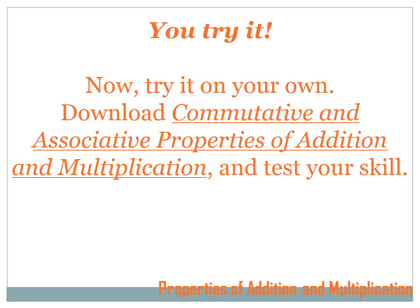That's our lesson on the commutative and the associative properties of addition and multiplication. I hope you learned a lot. Now it's time to test your skills. Go to mastermath.info on the web. Find the worksheet page. In the 6th grade area, first quarter, you'll see a worksheet on the commutative and associative properties of addition and multiplication. Print that, try the problems, and test your skill. If you need more help, go back and replay this lesson, and we hope you come back again real soon to take another lesson. Thank you.